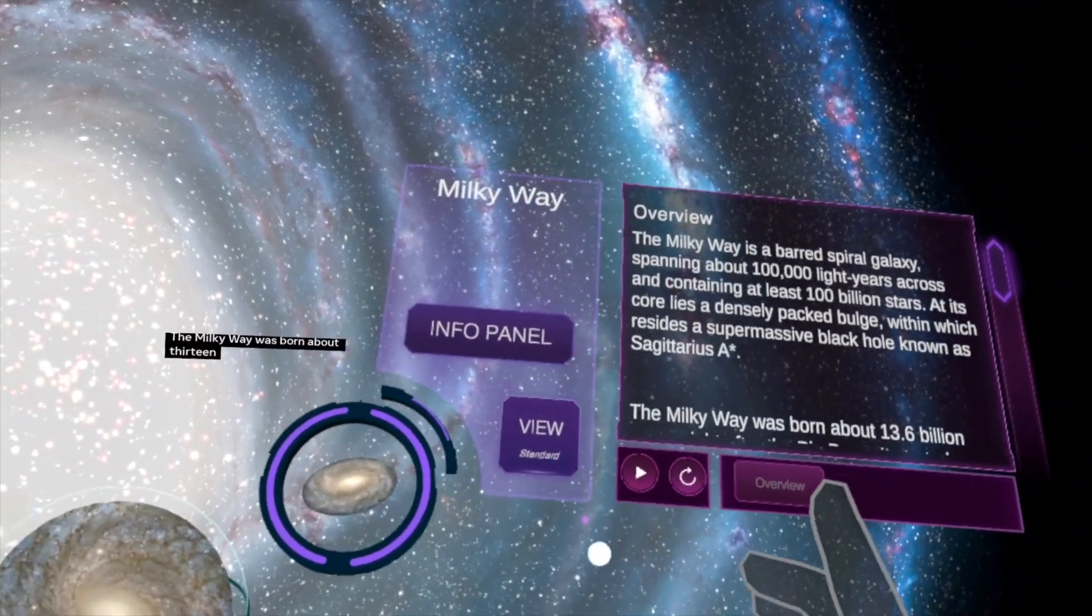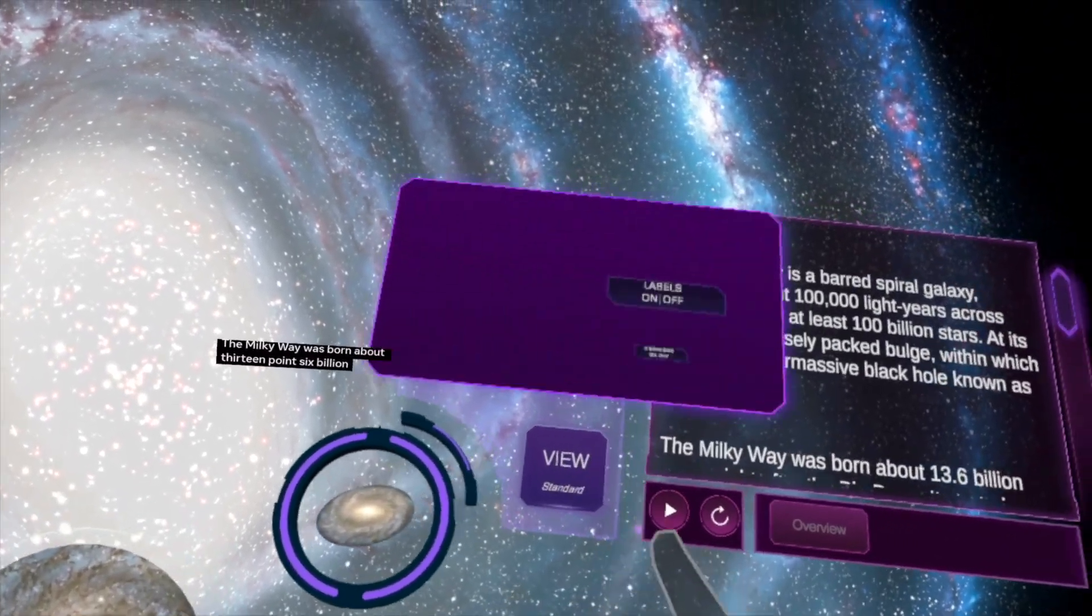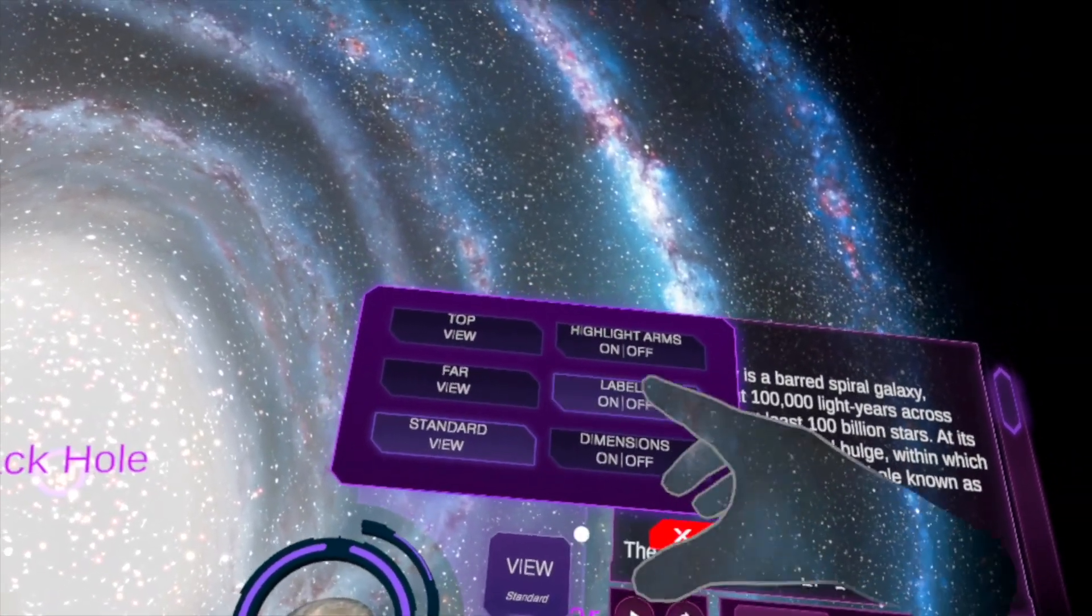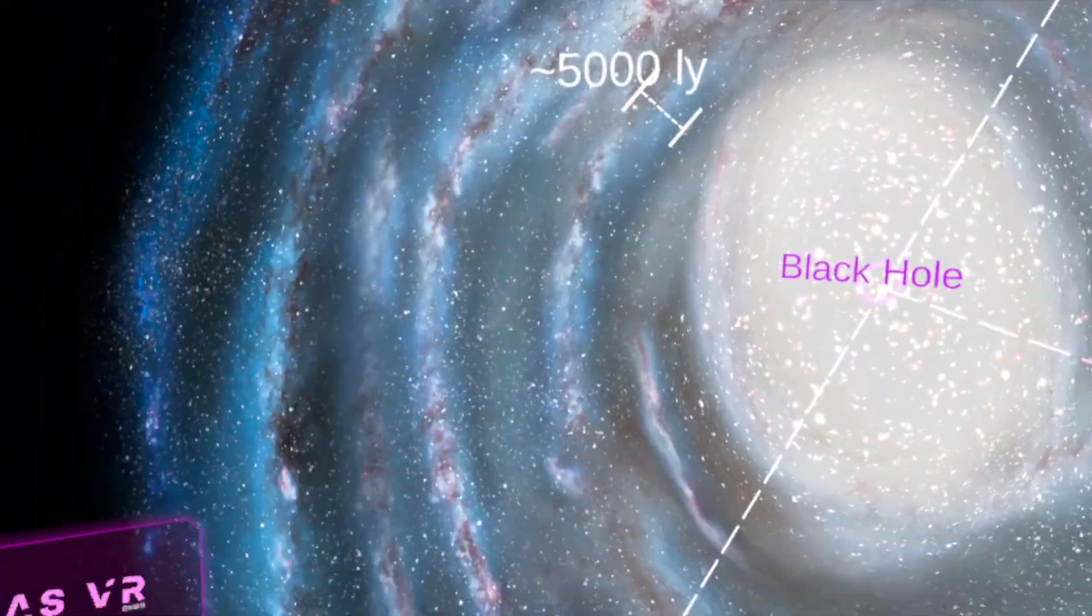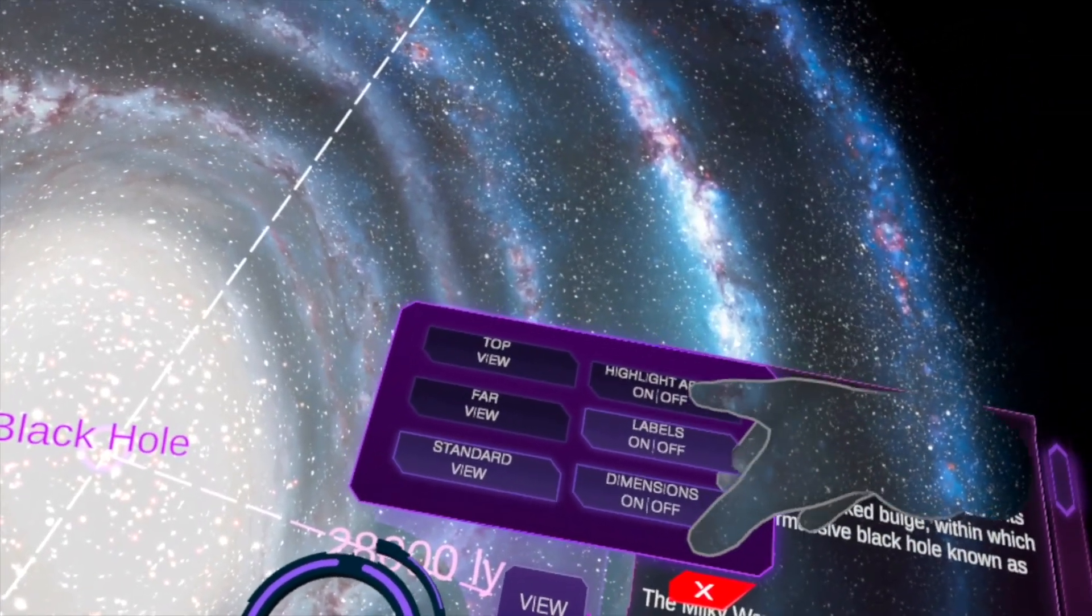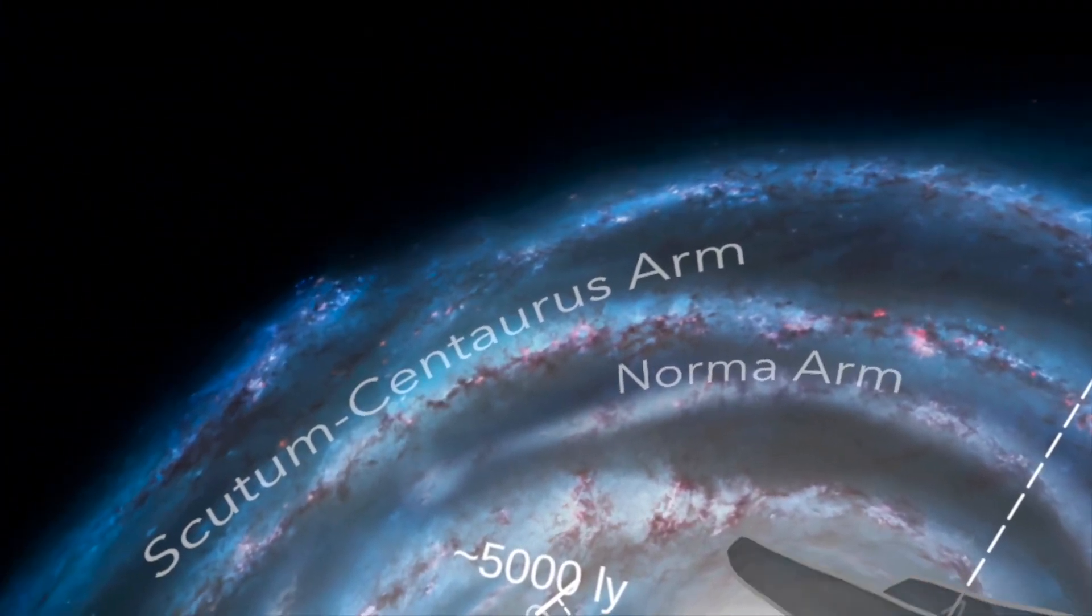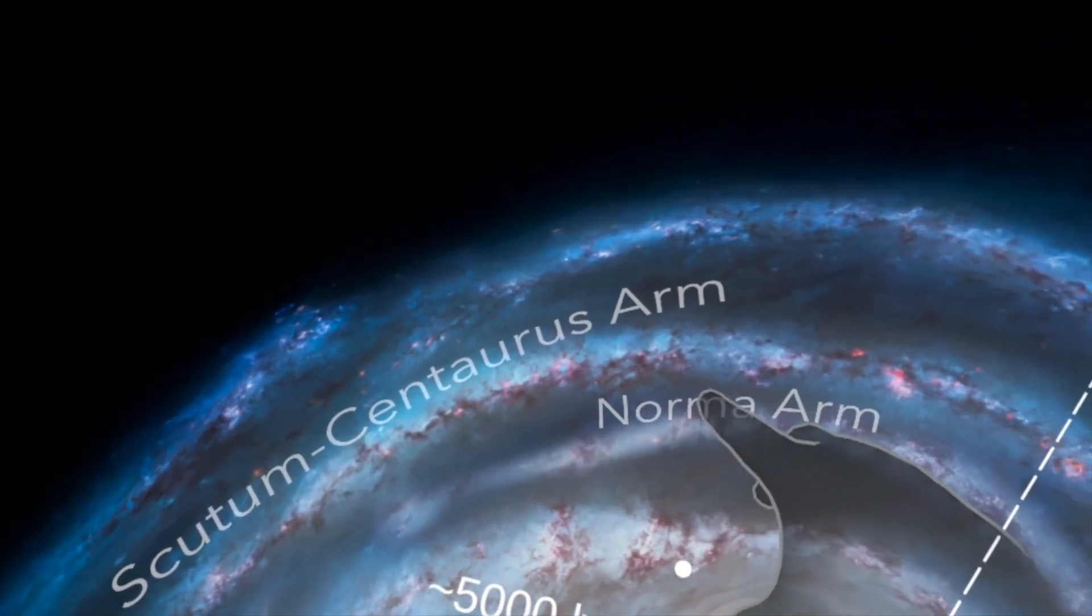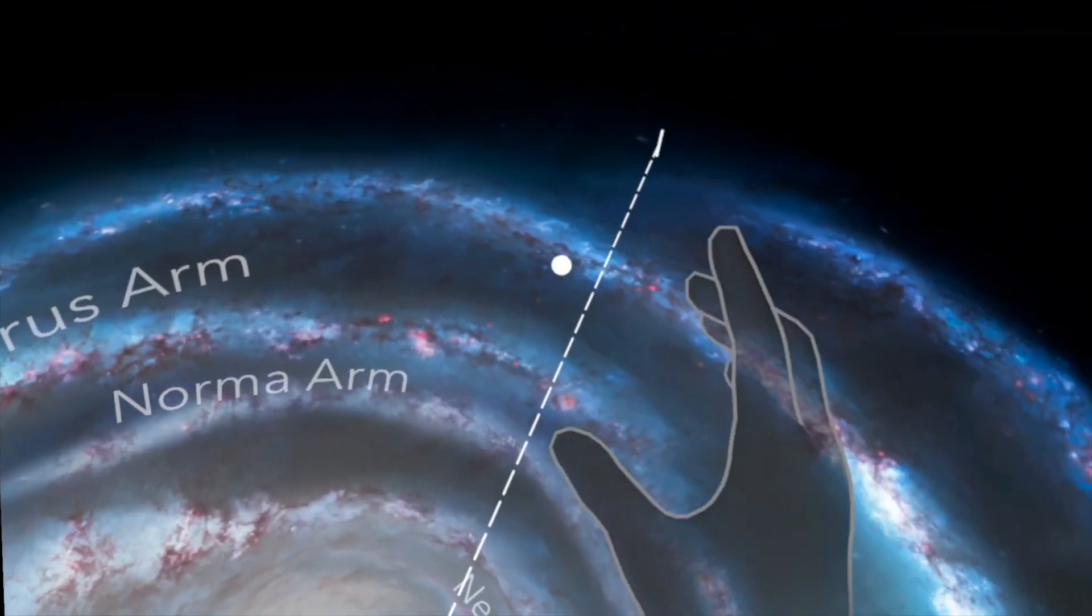Okay, Milky Way loading. Yes, let's take the Milky Way like that. The Milky Way is a barred spiral galaxy spanning about 100,000 light years across and containing at least 100 billion stars. At its core lies a densely packed bulge within which resides a supermassive black hole known as Sagittarius A. The Milky Way was born about 13.6 billion years ago. So do the info panel. Well, we have to click a lot of buttons. Label zones, oh yes, light years.